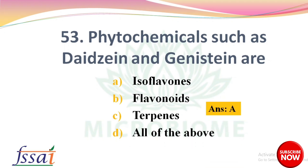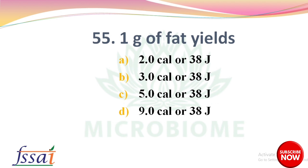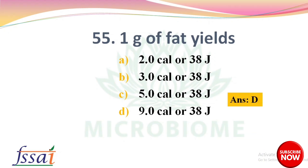Phytochemicals such as daidzein and genistein are — options: isoflavones, flavonoids, terpenes, all of the above. The right answer: option A, isoflavones. Next question: heat increment of feeding, which was earlier termed as — options: basic metabolic rate, specific dynamic action, RDA, specific action. The right answer: option B, specific dynamic action. Next: one gram of fat yields — options: 2 calories/38 joules, 3 calories, 5 calories, 9 calories. The right answer: option D, 9 calories/38 joules.